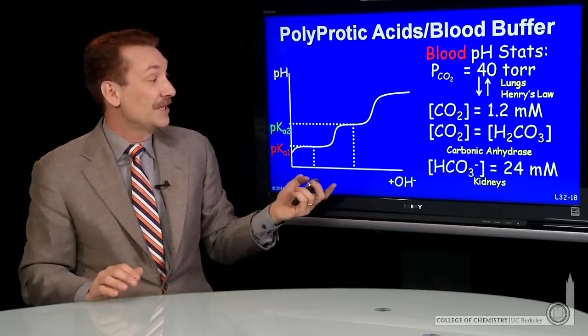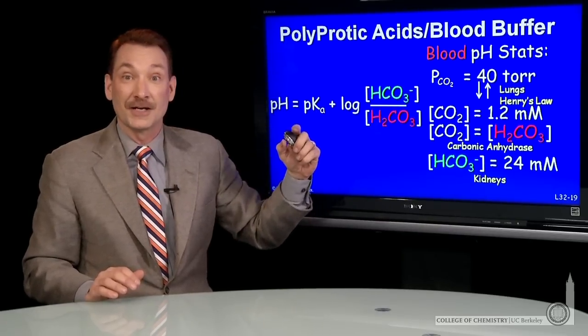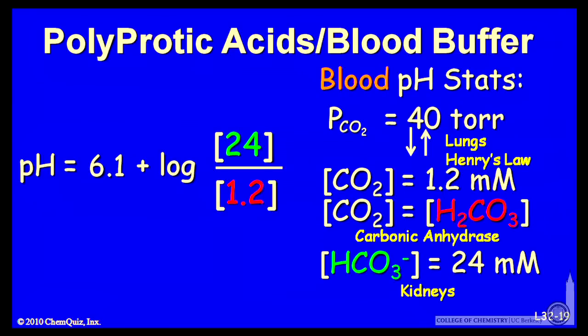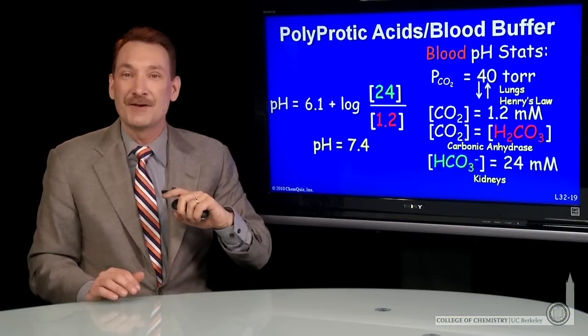So what does that mean for the pH of your blood? Well, you can use and apply your Henderson-Hasselbalch expression. The pH is the pKa plus log of the base form over the acid form. And in this case, the pKa of carbonic acid in blood is around 6.1. The acid and base form, we've seen the base form maintained by your kidneys at about 24 millimolar. The acid form maintained by Henry's law and your lungs and carbonic anhydrase at about 1.2 millimolar. So if you solve, you get a pH of around 7.4.